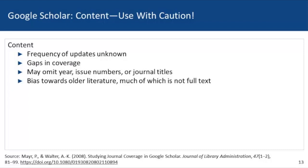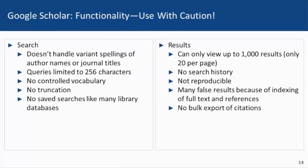Use Google Scholar with caution. Research has found that there is a relatively large gap in Google Scholar's coverage of certain topics, as well as weaknesses in its accessibility of open access content. The actual size and coverage of Google Scholar has been highly criticized. The frequency of updates is unknown — how often the search index is truly updated can't be answered from publicly available research. Google Scholar's functionality is another concern: Google does not search spelling variations of author or journal names, and your search queries are limited to 256 characters.